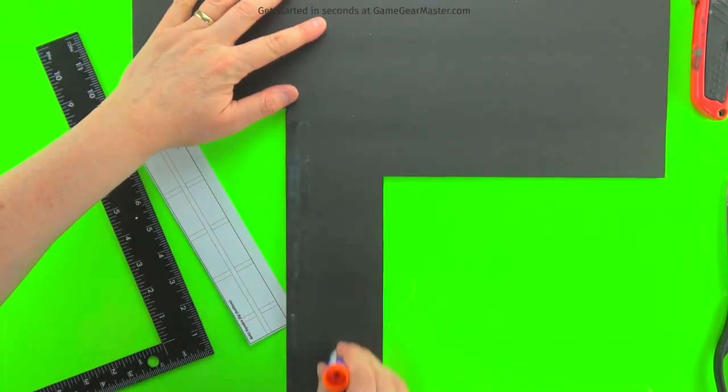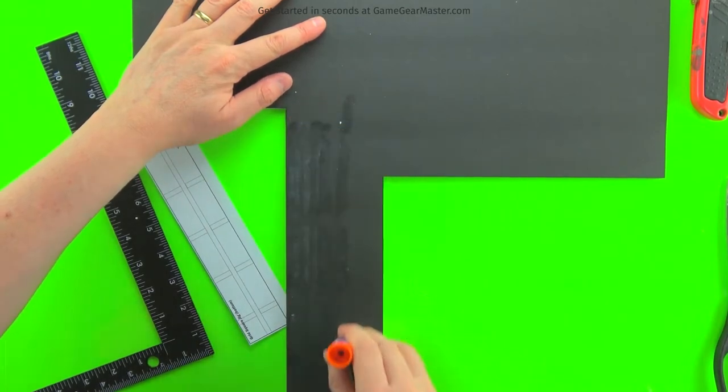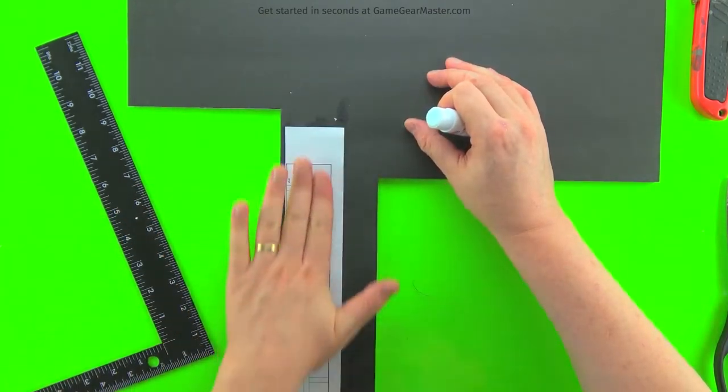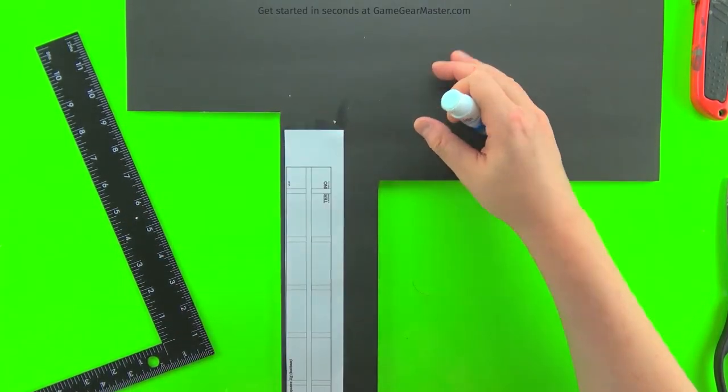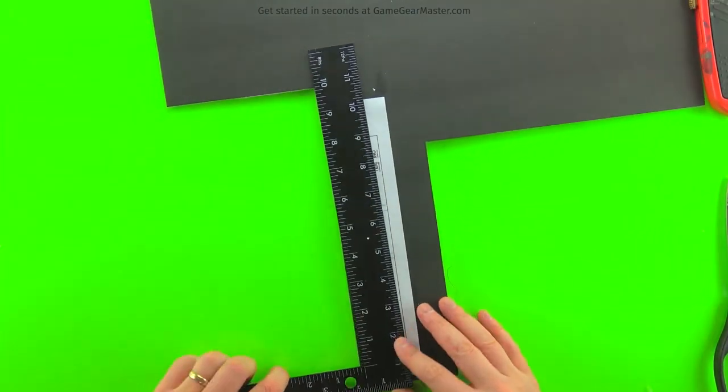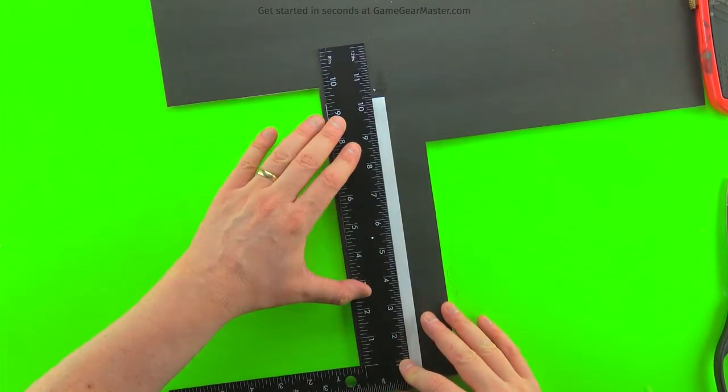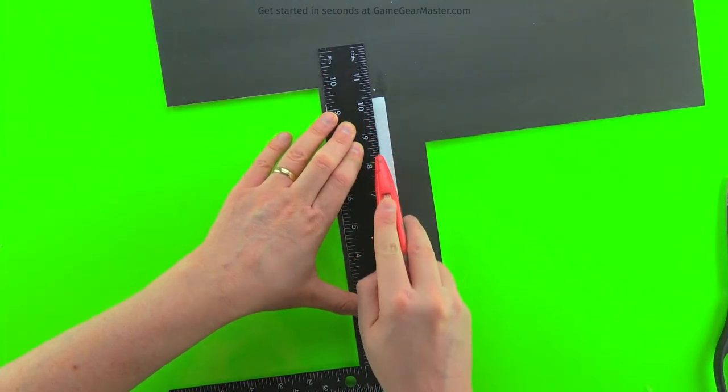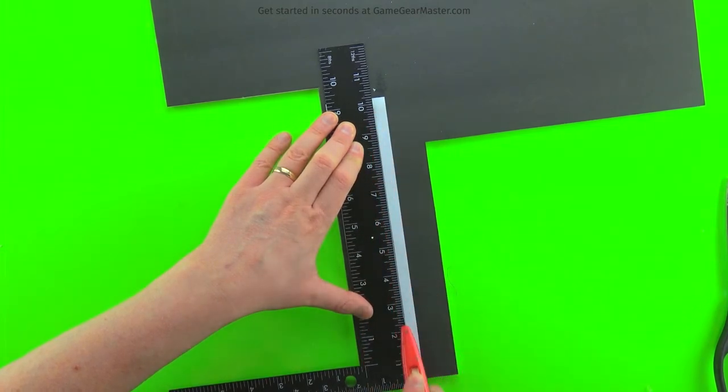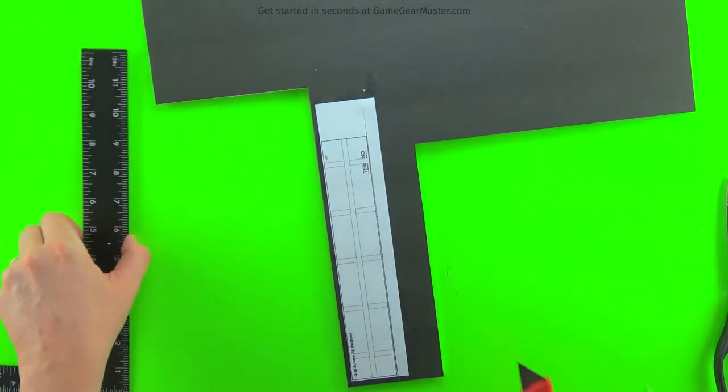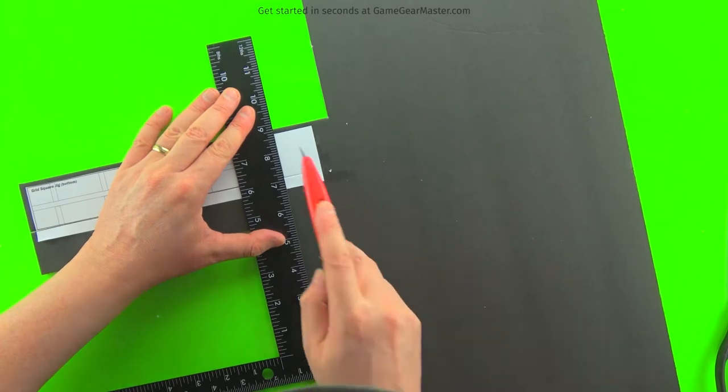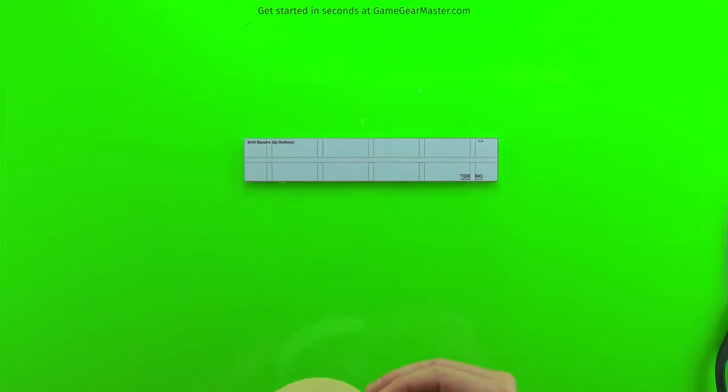We'll start by gluing the underside of the grid tile jig onto some foam board with the paper still on. Once that's glued on, we're going to cut out the grid tile jig along the edges of the printout using a ruler and several shallow cuts to get those cuts nice and accurate. Next we're going to add a masking tape border around the edge to give it more durability.